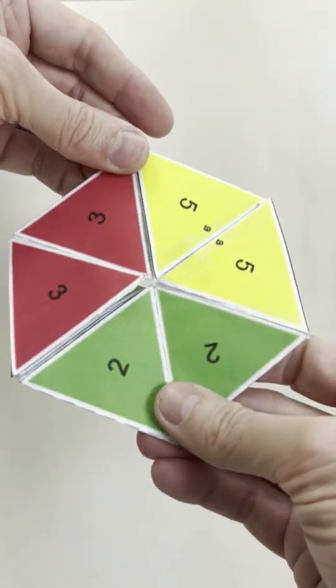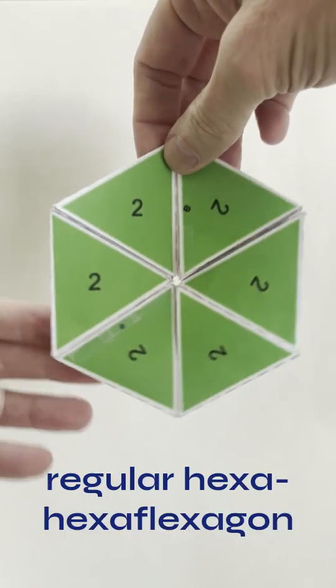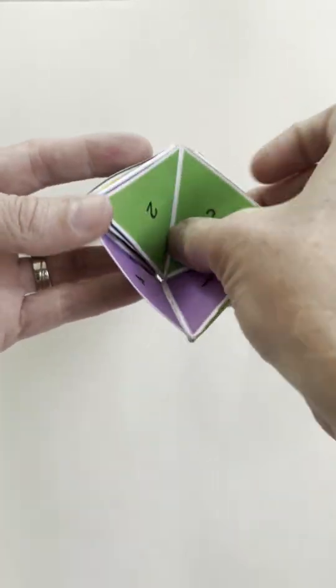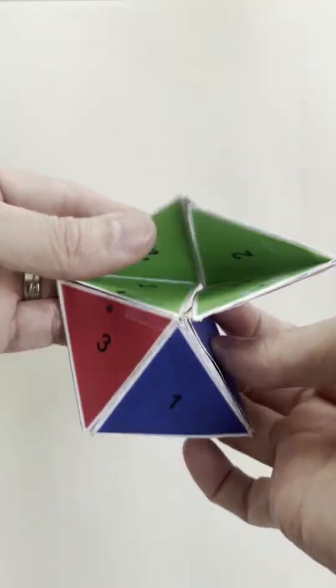I'm going to show a couple ways to get to this nice arrangement, starting from solid faces on a regular hexahexa-flexagon. The first way uses the tuck flex and the pyramid shuffle flex.